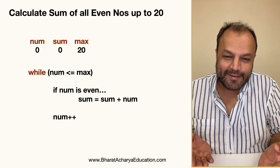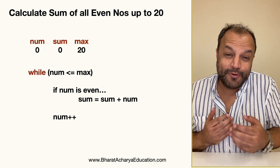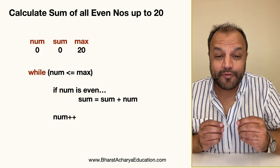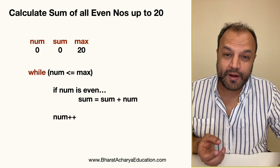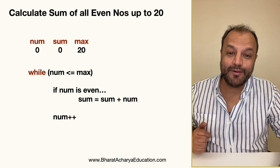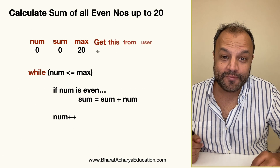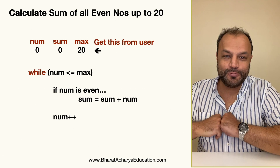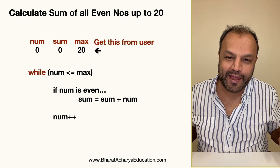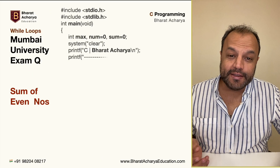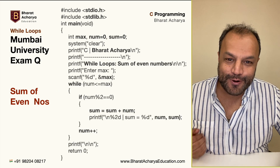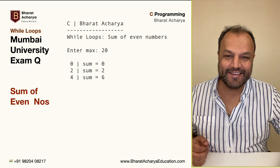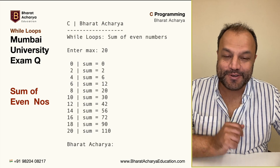This is the solution. In fact, you could even write a better program. Instead of restricting it up to 20, you can take the number from the user and make this a variable. So now this program works for any number. This is how your code looks, and this is how your results should be.